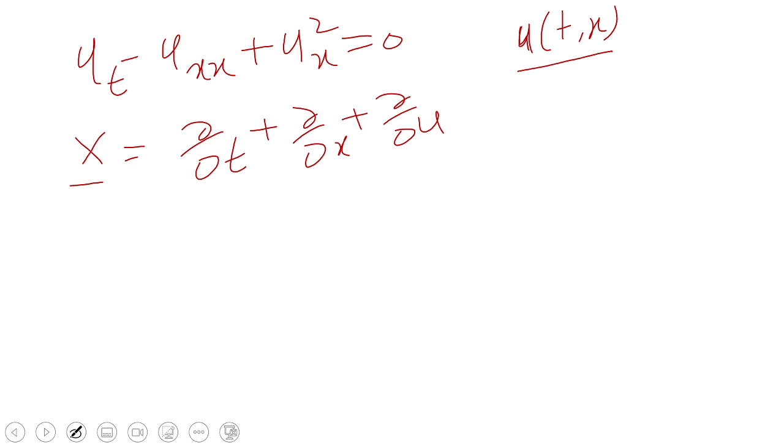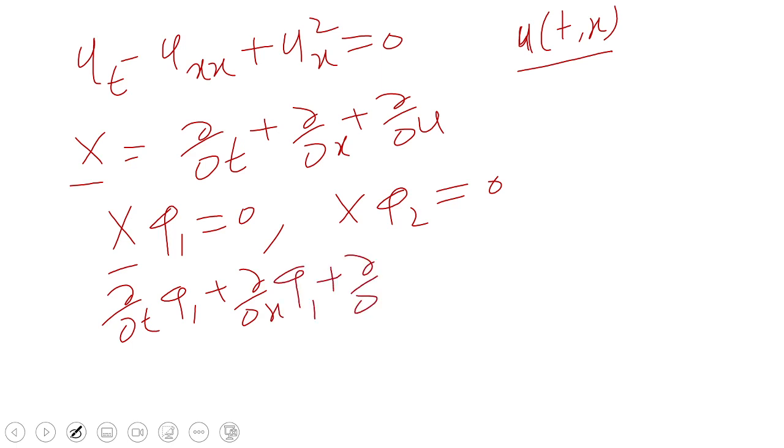We search out the invariant. So find invariant pi 1 and invariant pi 2 of this symmetry generator. So what is pi 2? It means partial by partial T pi 1 plus partial by partial X pi 1 plus partial by partial U pi 1 equal to zero.